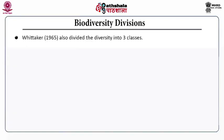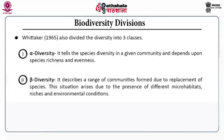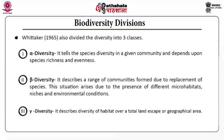The biodiversity divisions: scientists have divided diversity into three classes — alpha, beta and gamma. Alpha diversity tells the species diversity in a given community and depends upon species richness and evenness. Beta diversity describes a range of communities formed due to replacement of species. This situation arises due to the presence of different micro-habitats, niche and environmental conditions. Third is gamma diversity. It describes the diversity of habitat over a total landscape or geographical area.